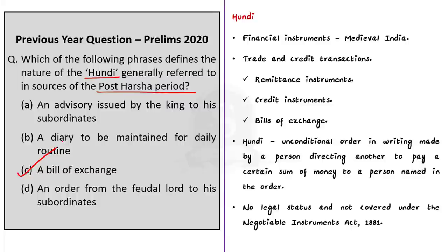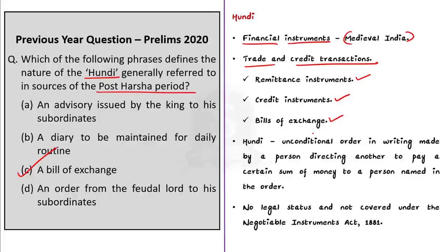Hundis refer to financial instruments developed in medieval India for the purpose of trade and credit transactions. They had multiple uses — for example, they were used as remittance instruments, where funds are transferred from one place to another. If an Indian living in Dubai sends his salary to his family in Kerala, that amount falls under remittance. Hundis were also used in trade transactions as a bill of exchange, making them credit instruments overall.